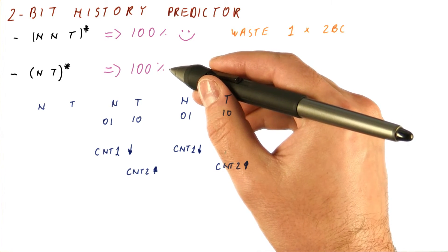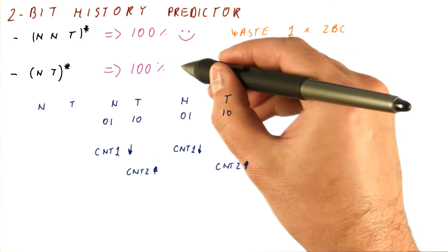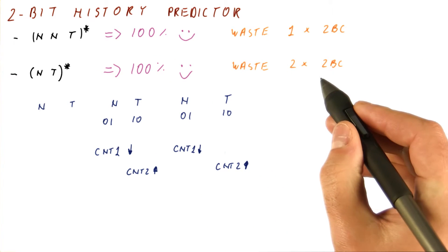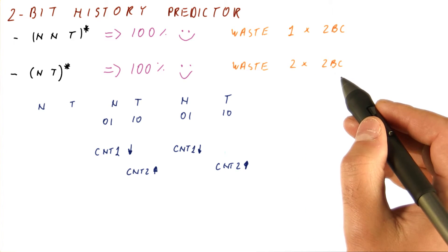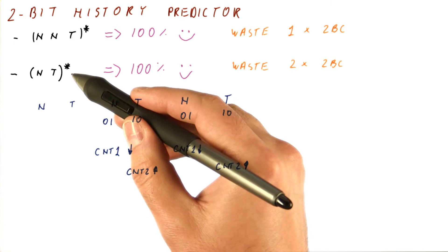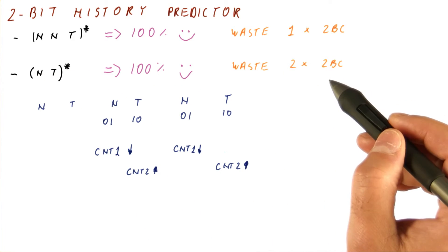We have already seen that the one-bit history predictor can predict this with 100% accuracy, which is good. But this predictor is not using half of its two-bit predictor entries. So basically, in the entry that corresponds to this branch, we're really using only two of the four two-bit counters.